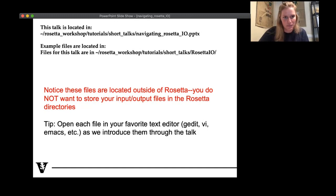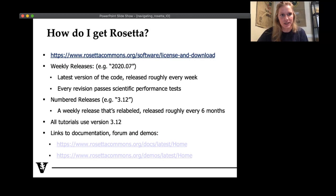We are going to be going through a couple of different files. And it would be helpful if you want to use your favorite text editor, whether that's gedit, vi, emacs, to look through those things as we go along. So how do I get Rosetta? You guys have already done this, hopefully, for this workshop. But I just wanted to give a quick overview. You can download it from rosettacommons.org. I'm going to be pointing to this website a lot. It's actually very helpful for a lot of different things.